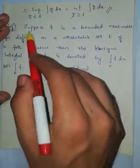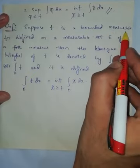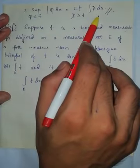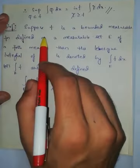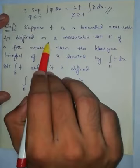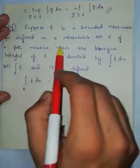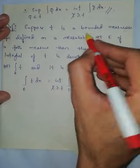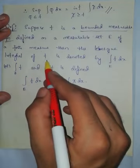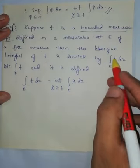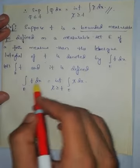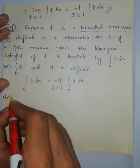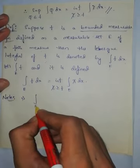Since f is a measurable function, both the supremum and infimum are equal. From the definition of the Lebesgue integral, suppose f is a bounded measurable function defined on a measurable set E of finite measure. Then the Lebesgue integral of f is denoted by the integral over E of f dx, and since both expressions are equal, the integral can be written as either the infimum or the supremum form.